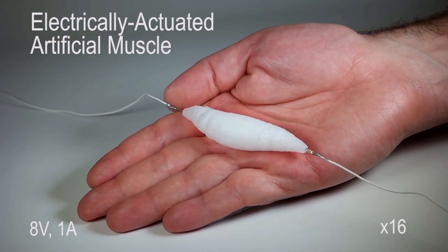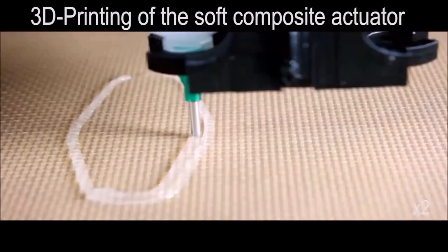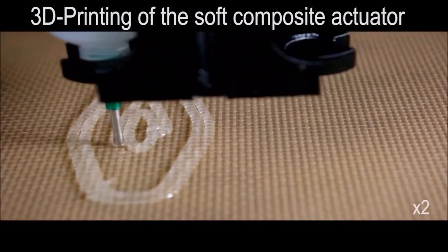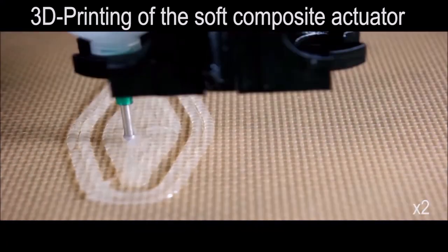The material, which can push, pull, bend and twist thanks to its use of silicone rubber and ethanol-dispensing micro-bubbles, is also capable of carrying 1,000 times its own weight.